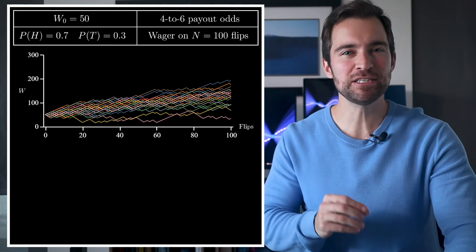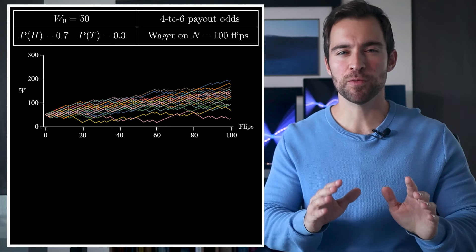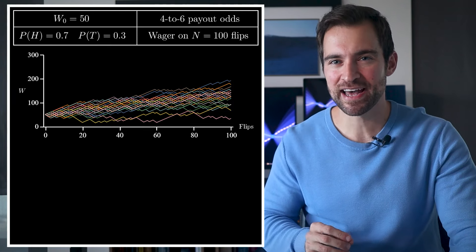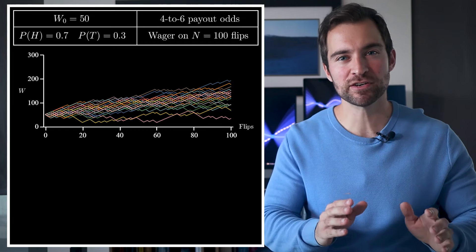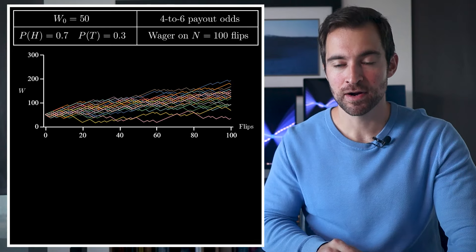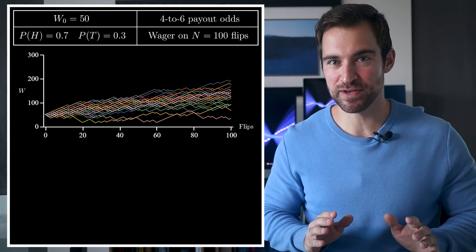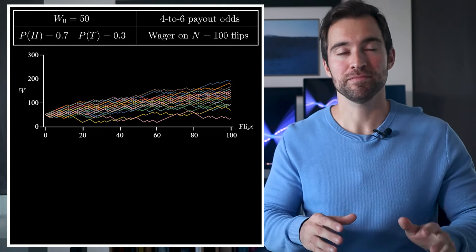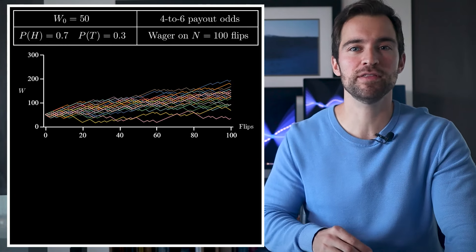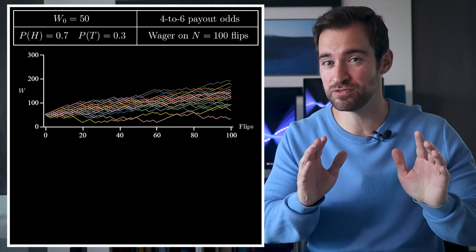Now, ultimately, we'd like to pick the best strategy. So we need a way to summarize these paths and their probabilities into a single number, so we can compare strategies with that number. Well, there are a variety of ways we could do that. We could look at the average final wealth, or the risk-adjusted final wealth, or, as economists would like, pass our final wealth into some utility function and then use the average utility.